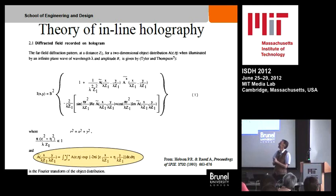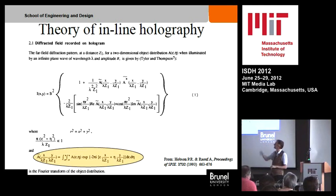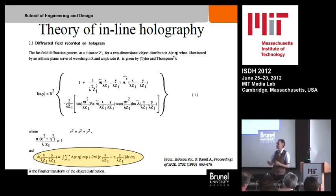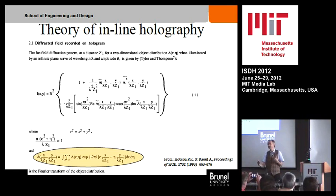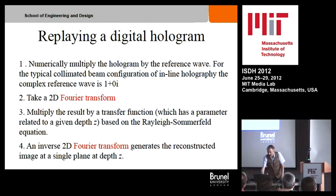The theory says — and Tyler and Thompson's names were mentioned again yesterday — that what you're recording in an inline hologram is essentially something which is a fringe-encoded version of the Fourier transform of the object. This is actually quite nice because you can see fairly quickly that if we're going to replay this at different depth slices without using a laser, then what we're going to end up doing is taking fast Fourier transforms and then using phase functions. And that's exactly what we do.